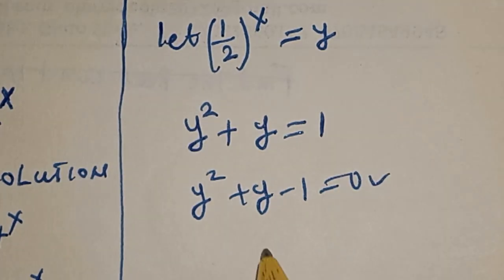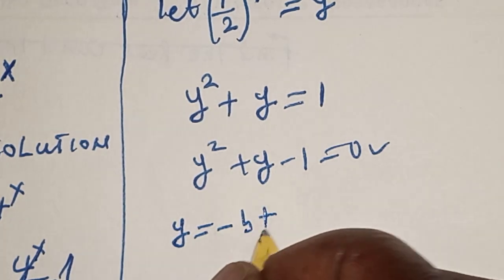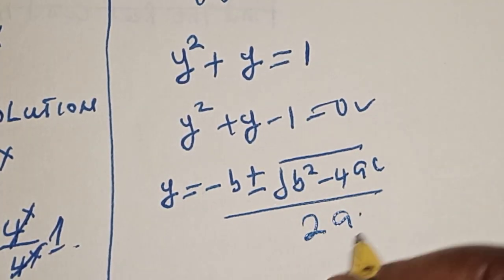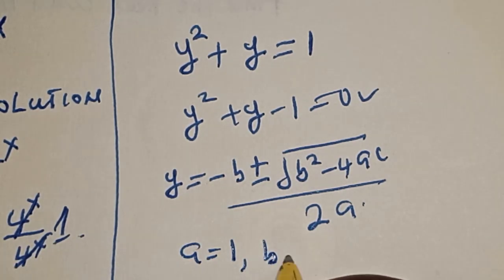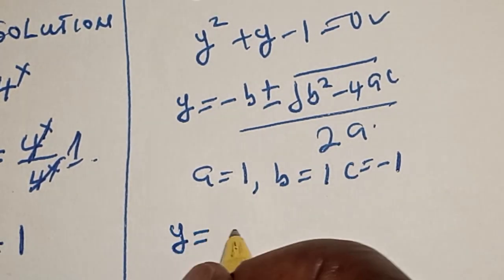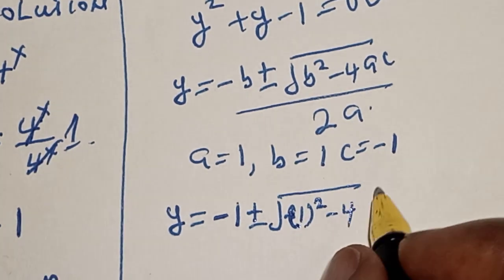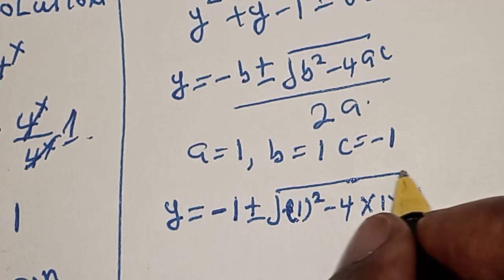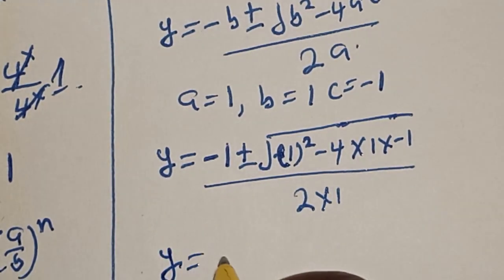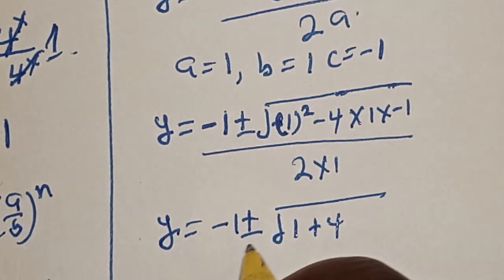This is a quadratic equation, which we solve using the quadratic formula: y equals negative b plus or minus the square root of b squared minus 4ac, all over 2a. Here a equals 1, b equals 1, c equals negative 1. Substituting: y equals negative 1 plus or minus the square root of 1 squared minus 4 times 1 times negative 1, divided by 2 times 1.